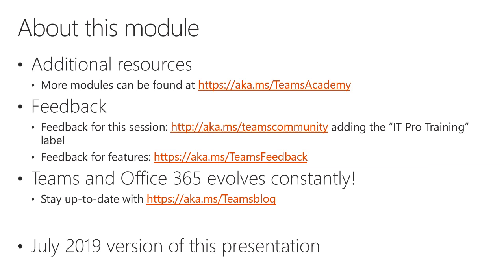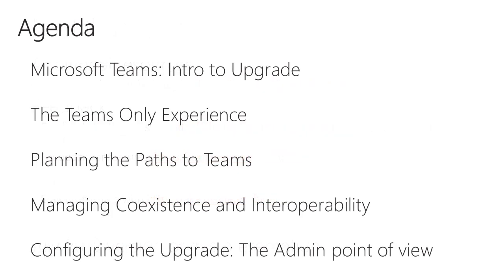The slide also indicates the current version of this presentation. The overall agenda for this training will be covering five areas. First, we'll cover Microsoft Teams — the intro to upgrade. We'll then talk about what the Teams only experience is when we look at the Microsoft Teams client. From there, we'll talk about how we plan the paths to Microsoft Teams. We'll then take a deep dive into managing coexistence and interoperability, and finally we'll finish with configuring the upgrade from the admin point of view.